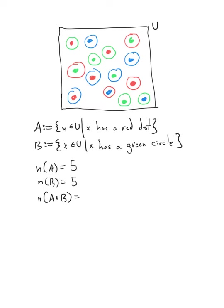So there are five elements in A and five elements in B. Let's say I was interested in the number of elements that either have a red dot or a green circle. One could think there are five elements in the set of red dots and five in the set of green circles, so you could think there are 10 — but let's see if we can count them.